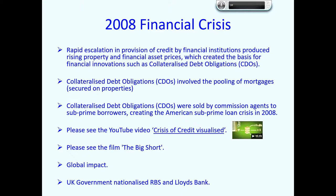The provision of large amounts of debt to subprime borrowers led to the subprime loan crisis in America in 2008, which is very well explained in the YouTube video 'Crisis of Credit Visualized'. The context is also explained in the Hollywood film 'The Big Short'. A large value of collateralized debt obligations were generated in the United States and sold in global financial markets, and the resulting default on large amounts of this debt had a global impact which ultimately led to the UK government nationalizing Royal Bank of Scotland and also Lloyds Bank.